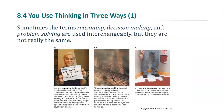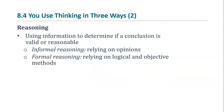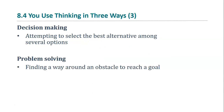When we consider the term thinking, we're usually talking about three different processes: reasoning, decision making, and problem solving. With reasoning, we're using some information we have to determine if a particular conclusion is valid or reasonable. We may do this formally using logical and objective methods, or informally based on gut instincts. Decision making is the attempt to select the best alternative among several options — for example, chocolate cake or cheesecake after dinner. Problem solving is attempting to reach a goal by surmounting particular obstacles.